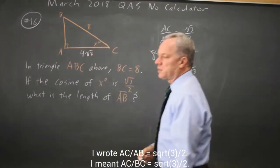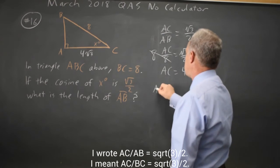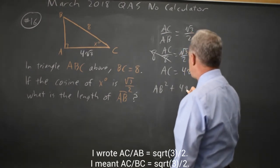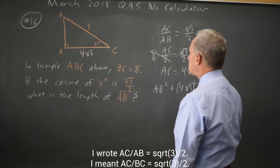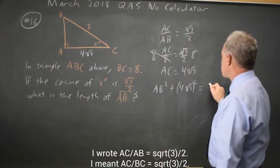We're looking for side AB, and now I can use the Pythagorean Theorem. AB squared plus 4 root 3 squared, that's the two short sides of this right triangle, equals 8 squared.